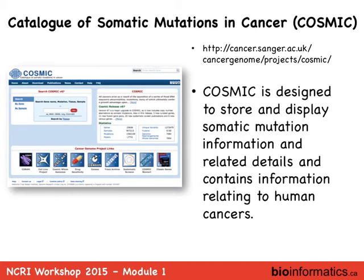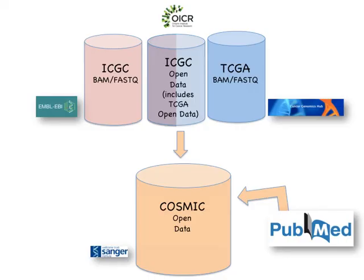Quickly, the COSMIC database — Catalogue of Somatic Mutations in Cancer — comes out of the Sanger Institute in Hinxton. COSMIC gets its data from places like ICGC and from PubMed, reading the literature for all papers discussing somatic mutations. COSMIC predates ICGC and TCGA, so they've been collecting somatic mutations for a long time — including targeted sequencing studies that looked at one gene, like KRAS, in thousands of individuals.